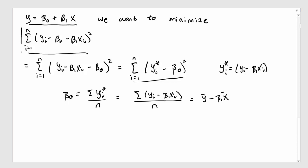So my least squares criteria is only going to get smaller if I plug in a beta naught that satisfies y bar minus beta 1 xi bar.